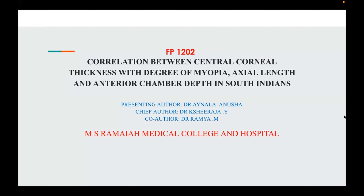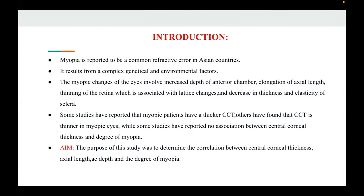I will be presenting on correlation between central corneal thickness with the degree of myopia, axial length and anterior chamber depth in South Indian population. Introduction: myopia is reported to be a common refractive error in Asian countries. It results from complex genetic and environmental factors. The myopic changes of eyes involve increased depth of the anterior chamber, elongation of the axial length, and thinning of the retina which is associated with lattice changes and decrease in thickness and elasticity of the sclera. Some studies have reported that myopic patients have a thicker central corneal thickness and others have found that it is thinner, while some studies have reported no association between central corneal thickness and degree of myopia.